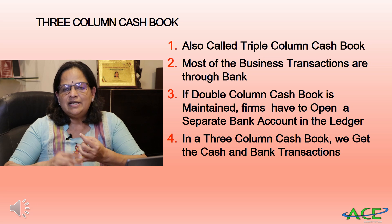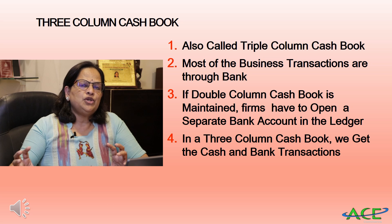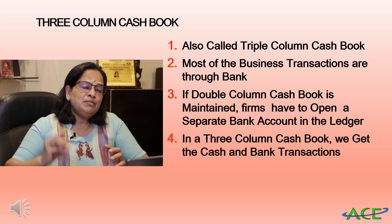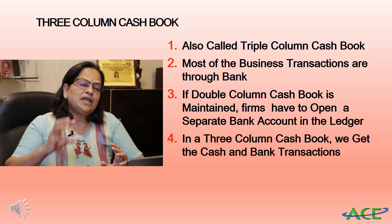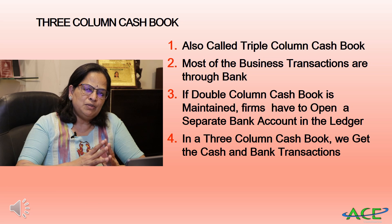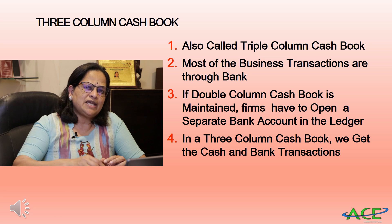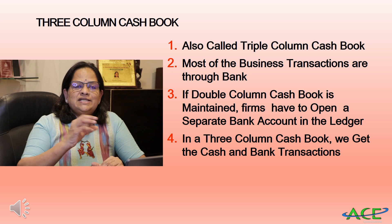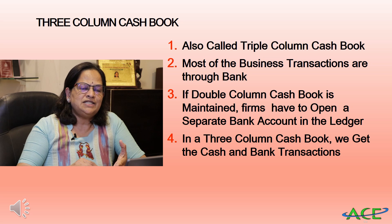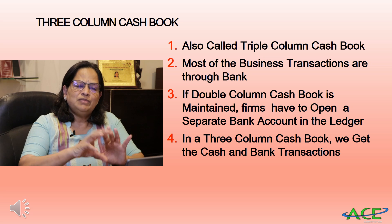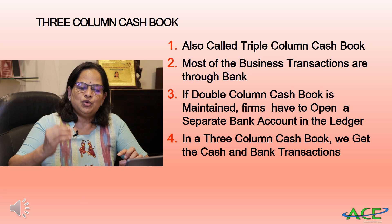We can get the cash balance at any point of time just by balancing the account. The cash book serves as both a principal book and a subsidiary book. It is a principal book because all cash transactions are immediately posted in the cash book. In the triple column cash book, we don't have to maintain cash and bank ledger accounts separately — we can get the balance directly from this cash book itself.